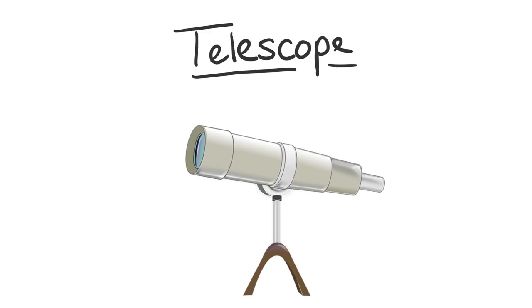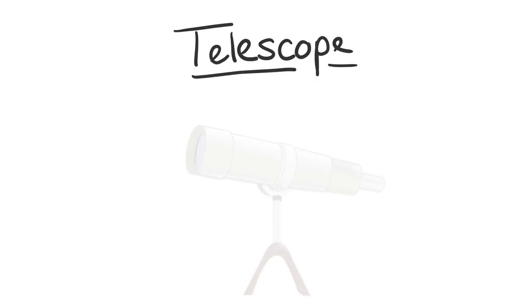Last but not least, we'll roughly look at how a refracting telescope works. A refracting telescope needs two convex lenses, the objective and the secondary lens. The objective lens scales the image down. The secondary lens, also called eyepiece, magnifies this image so our eye can see it.